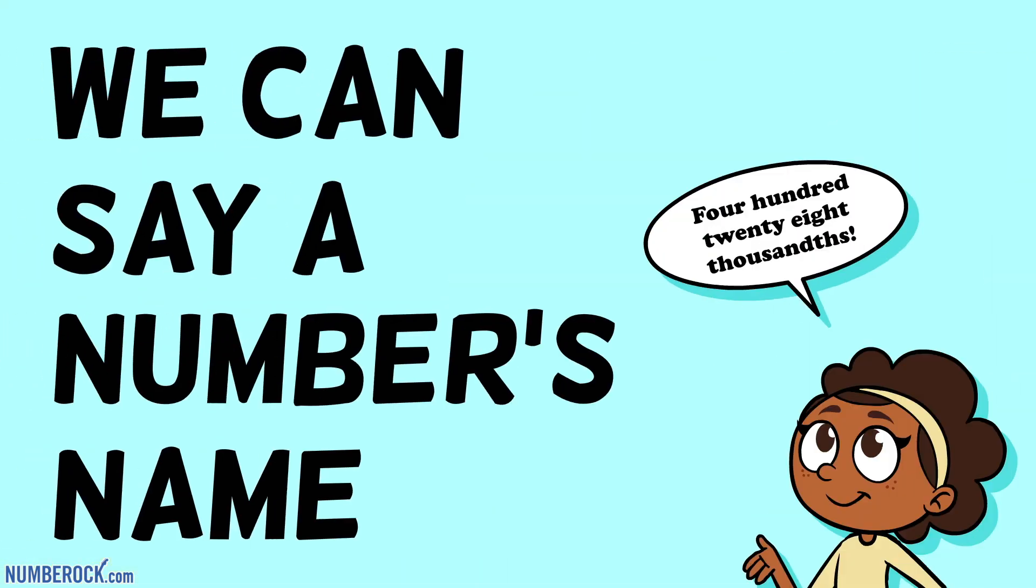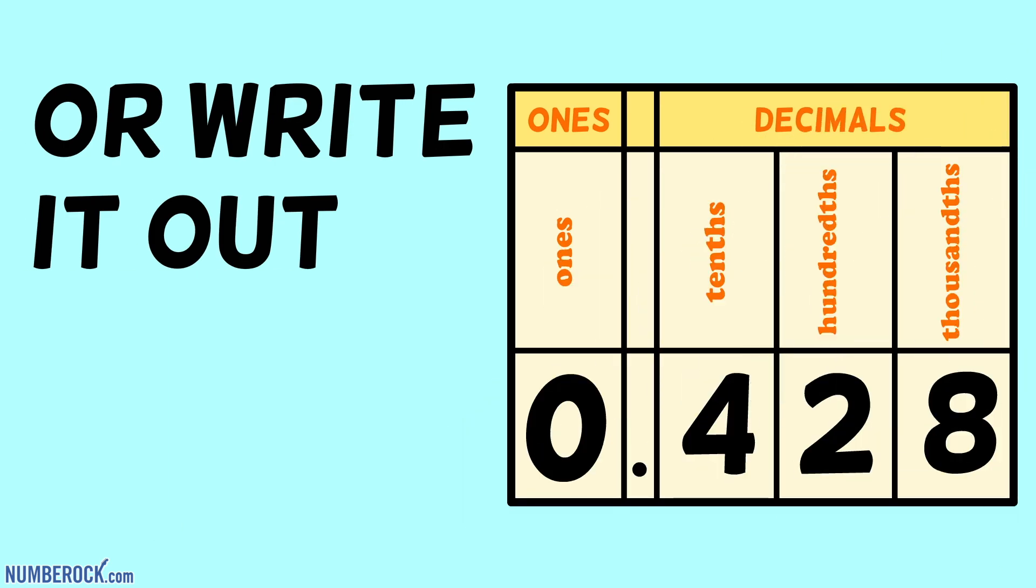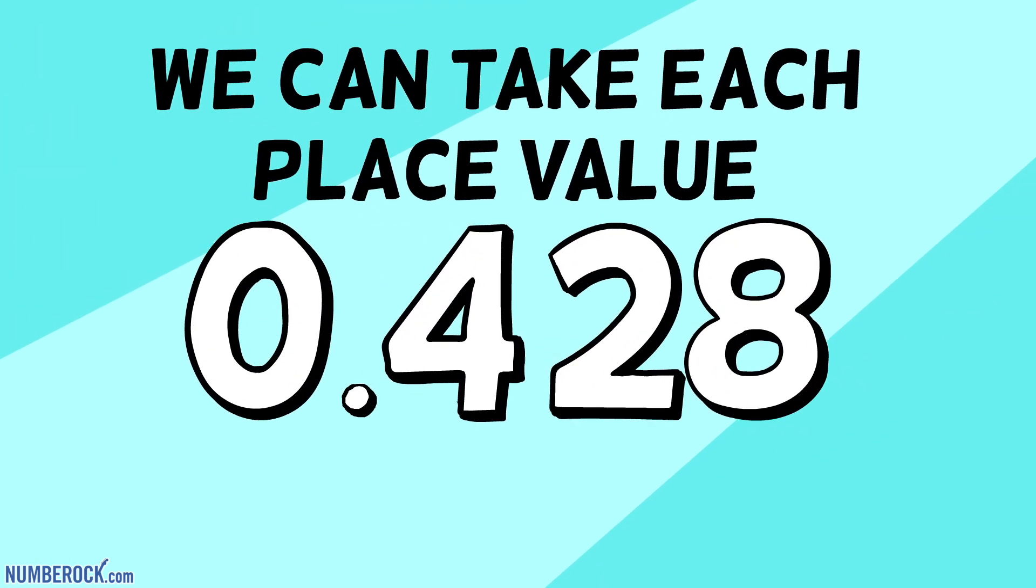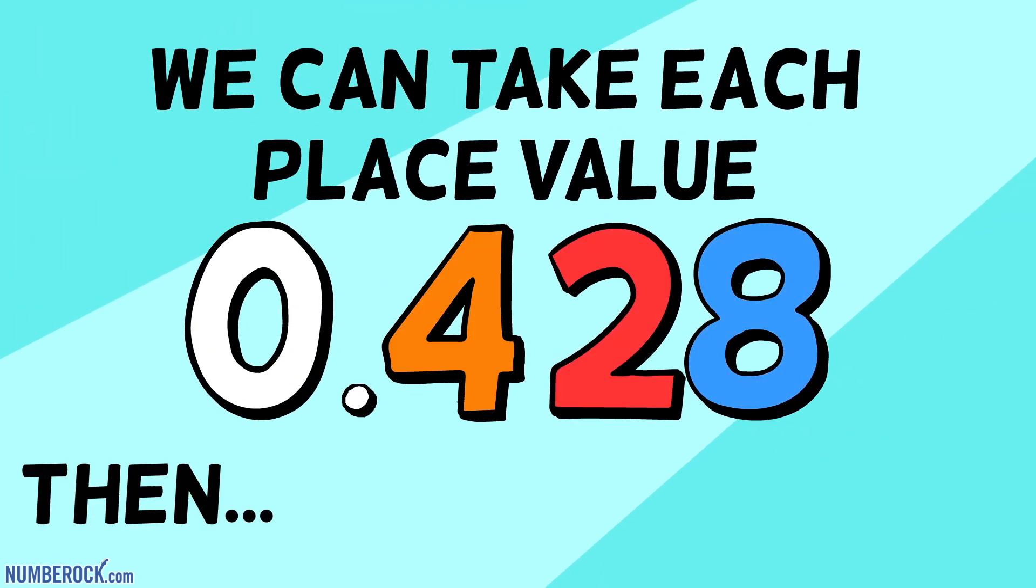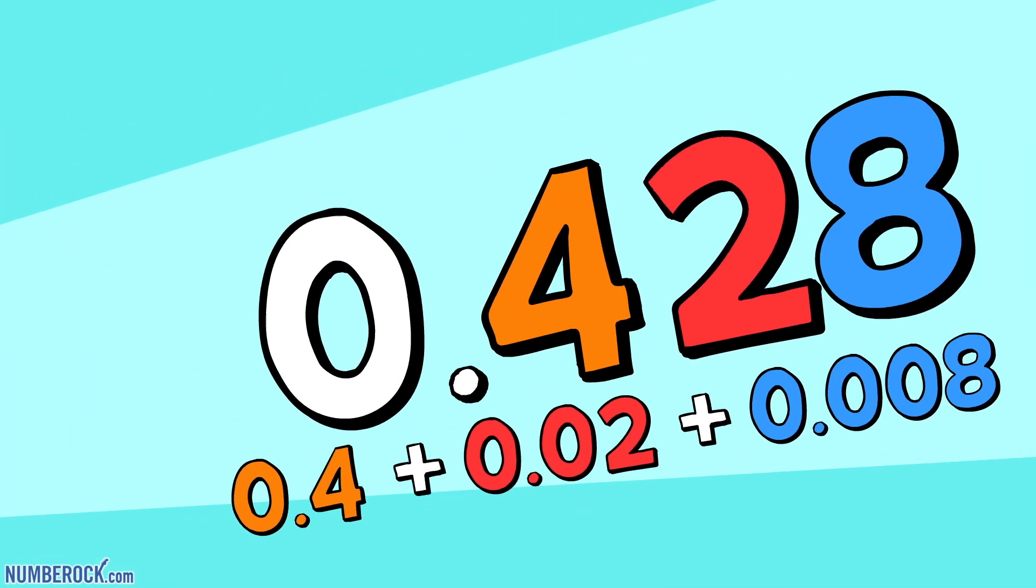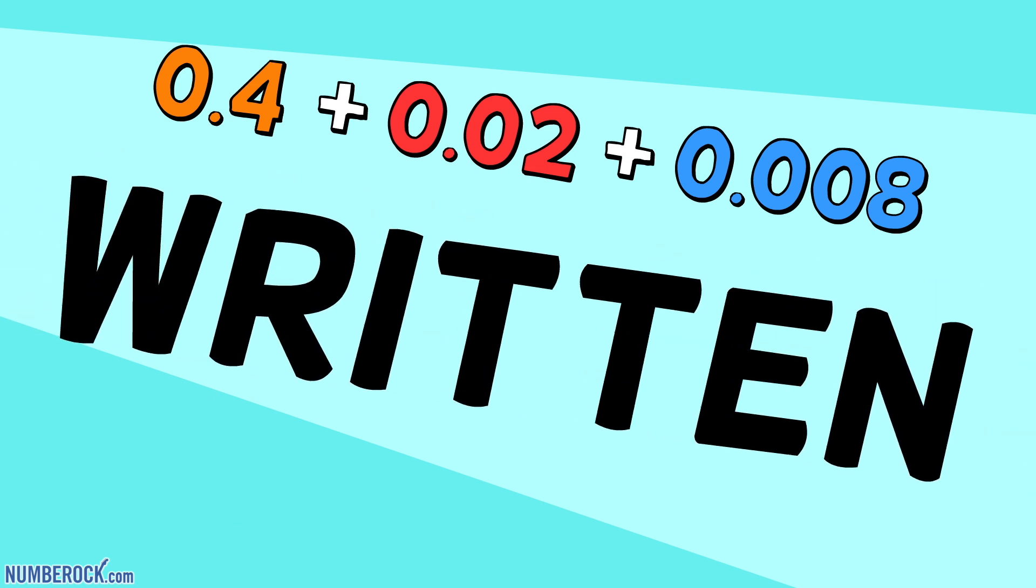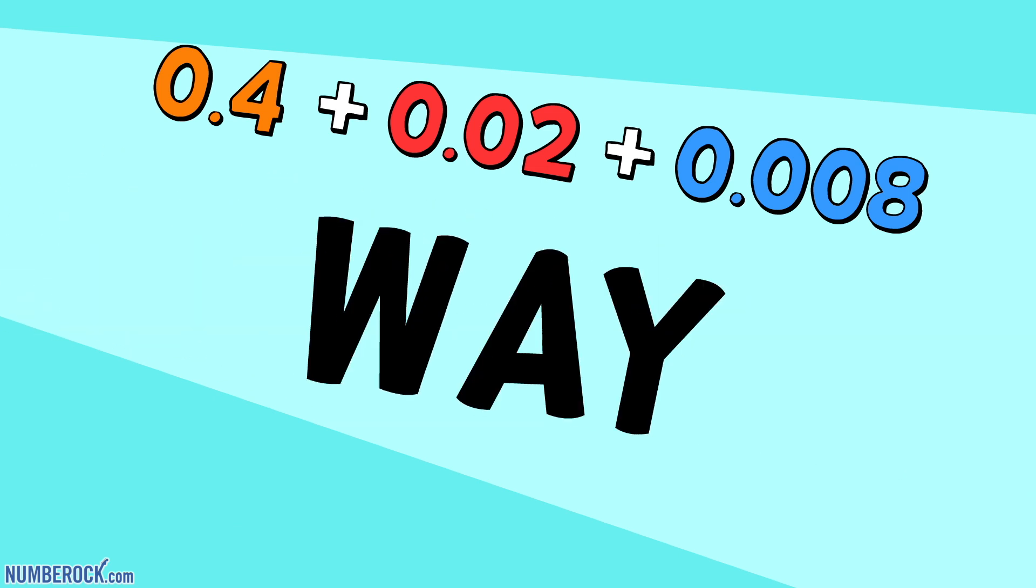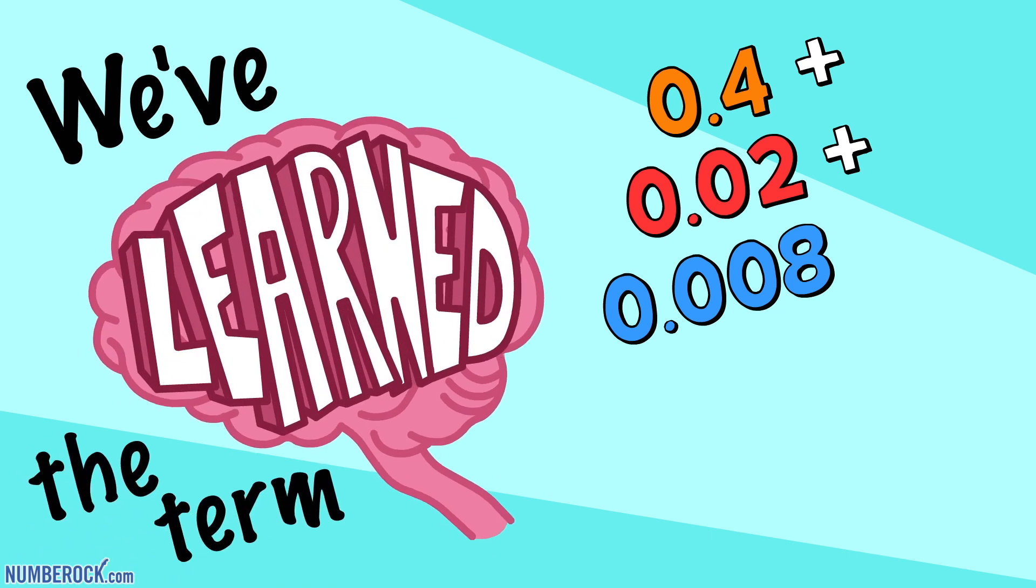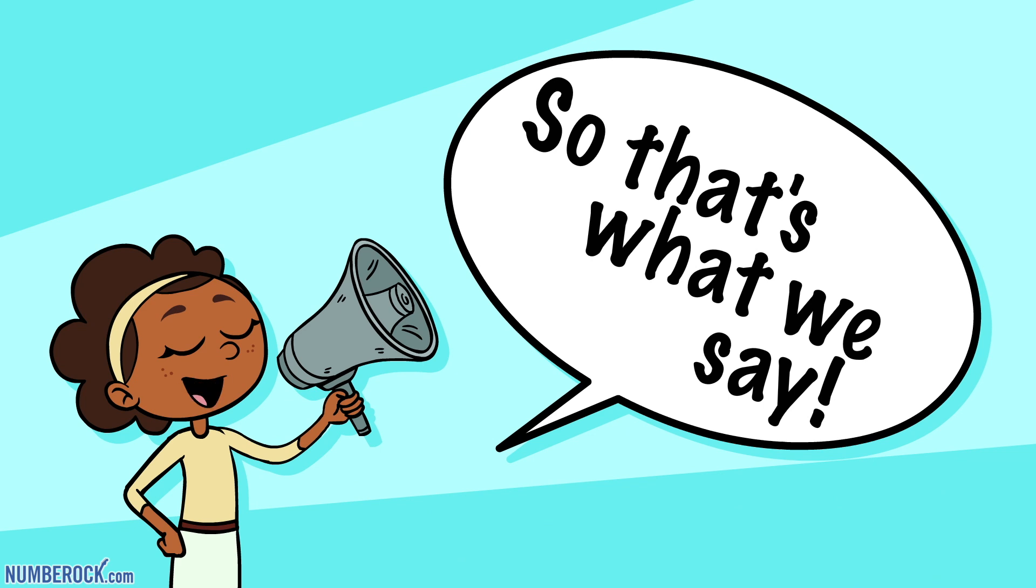Now check it out. We can say a number's name or write it out on a chart. We can take each place value and then we can break it apart. When we want to define numbers written in this way, we've learned the term expanded form. So that's what we say.